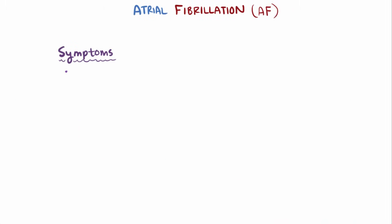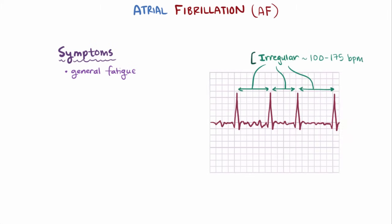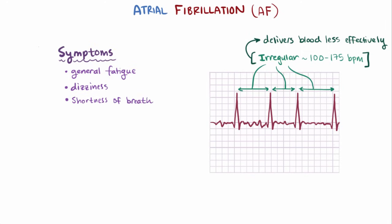Common symptoms of AF are feelings of general fatigue, since the heart rate isn't being governed by the sinus node anymore and contracts at irregular intervals, delivering blood less effectively to the tissues. Other related symptoms include dizziness, shortness of breath, and weakness. Patients might also feel palpitations or a thumping in their chest.